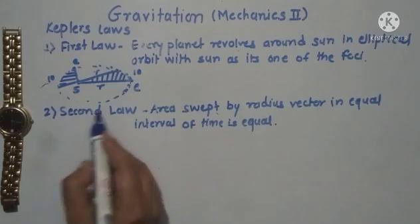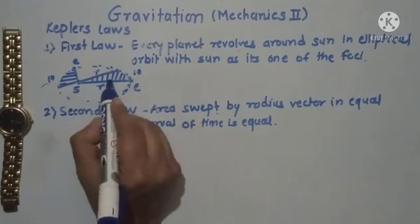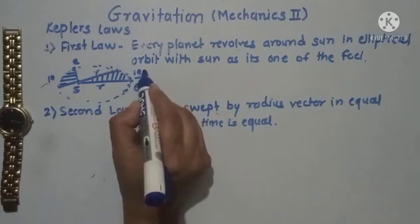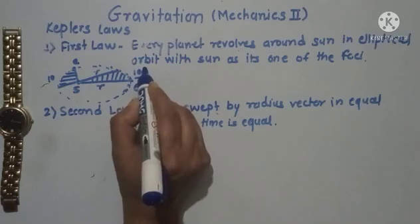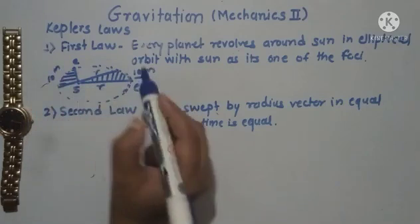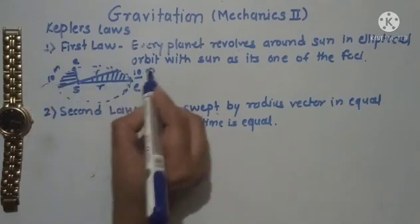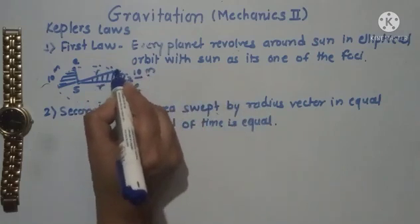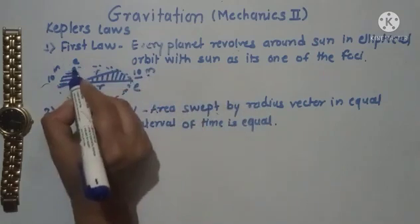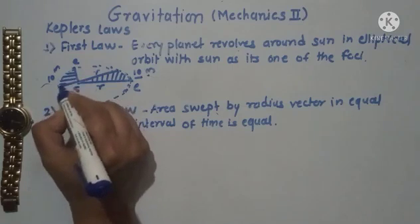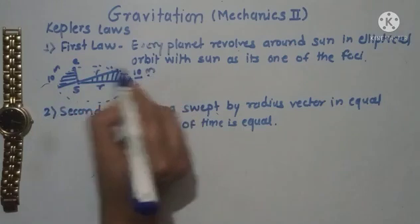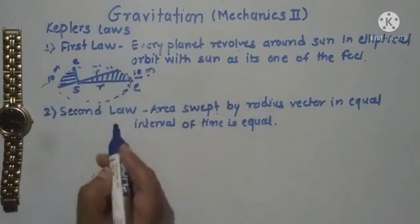The second law states that the area swept by the radius vector in equal intervals of time is equal. Whether the time interval is 10 minutes, 10 seconds, or 10 hours, the areas swept in those equal intervals are always the same. This is Kepler's second law.